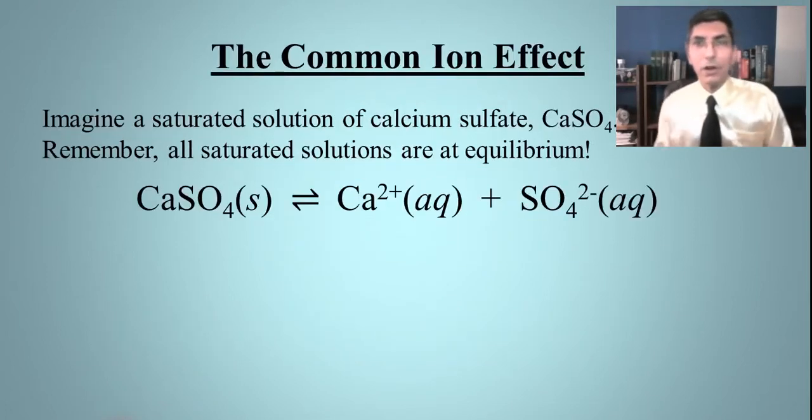Let's take a look at another example that we could have here. This is something called the common ion effect, and this has to do with the fact that if we already put, in this case, some calcium ions or some sulfate ions into a solution of, let's say, distilled water, you're not going to be able to dissolve as much calcium sulfate in there as if you would if there were a pure distilled water solution.